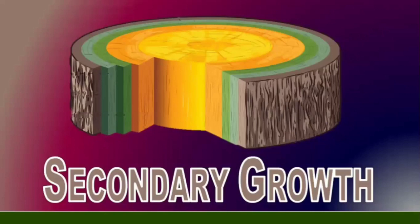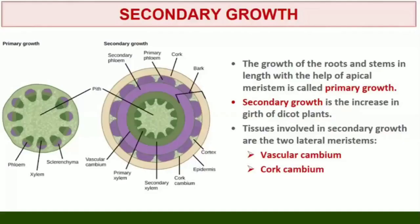6.4 Secondary Growth. The growth of roots and stems in length with the help of apical meristem is called primary growth. Apart from primary growth, most dicotyledonous plants exhibit an increase in girth. This increase is called secondary growth. The tissues involved in secondary growth are the two lateral meristems: vascular cambium and cork cambium.